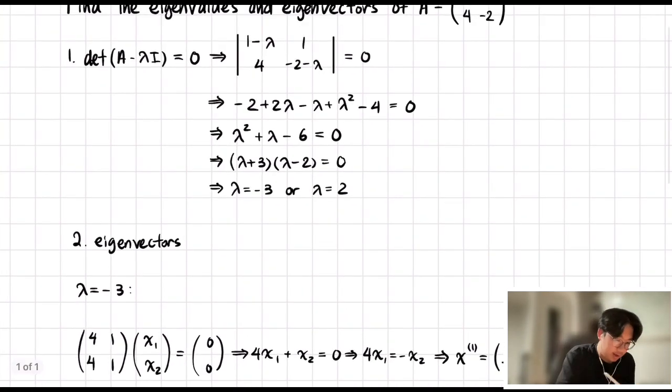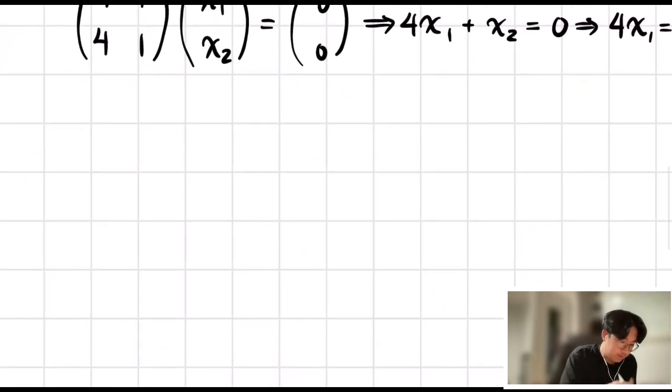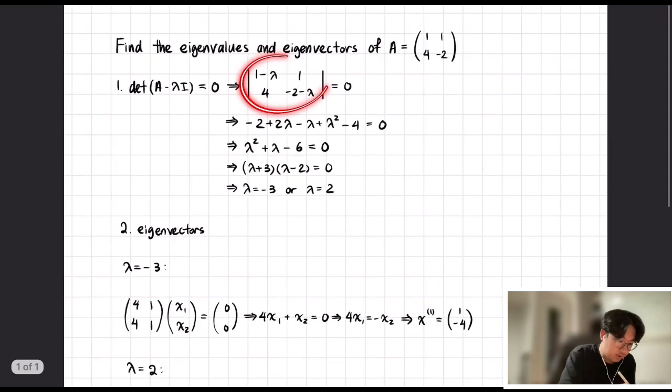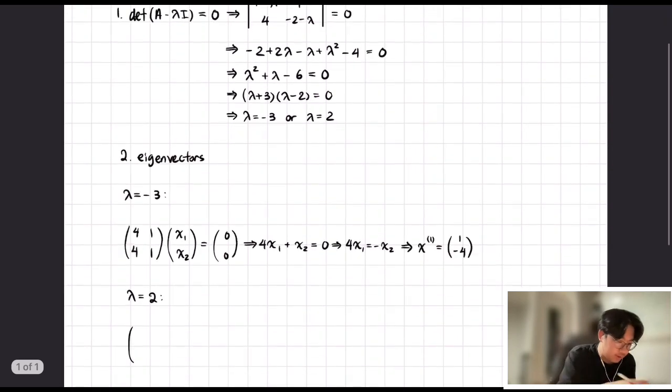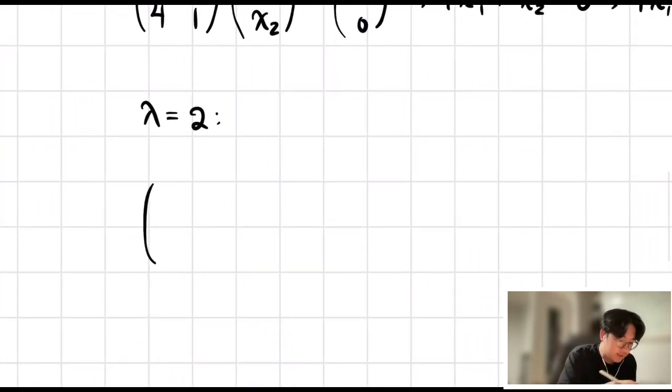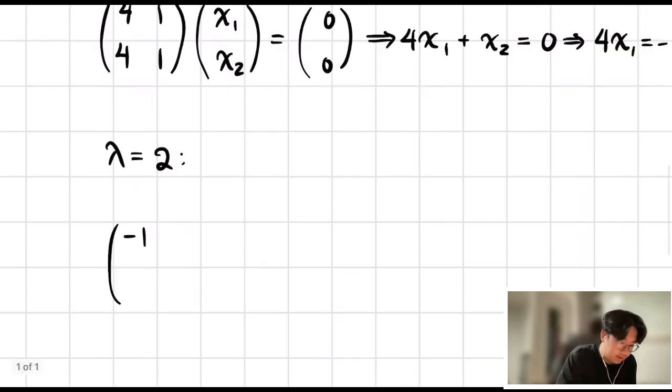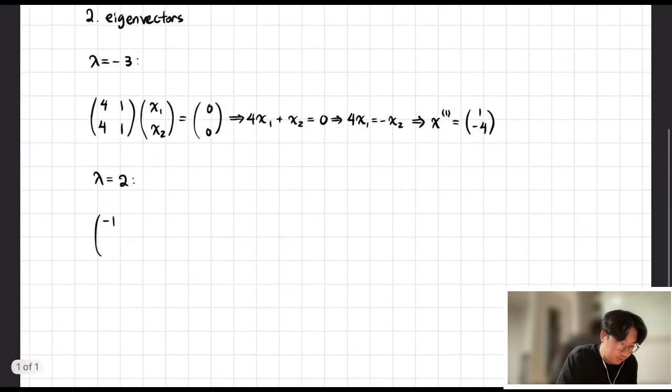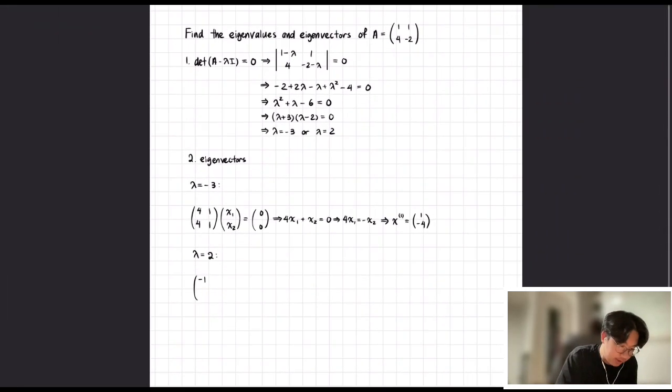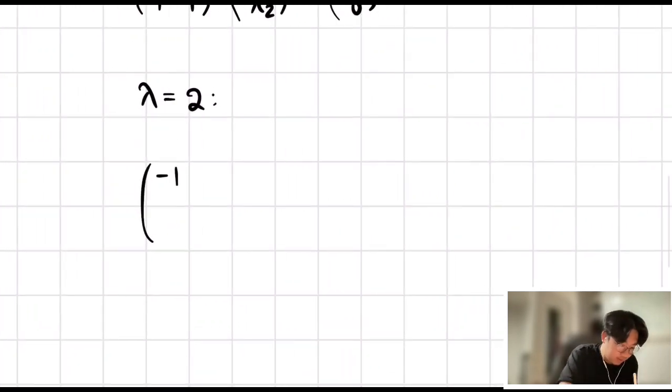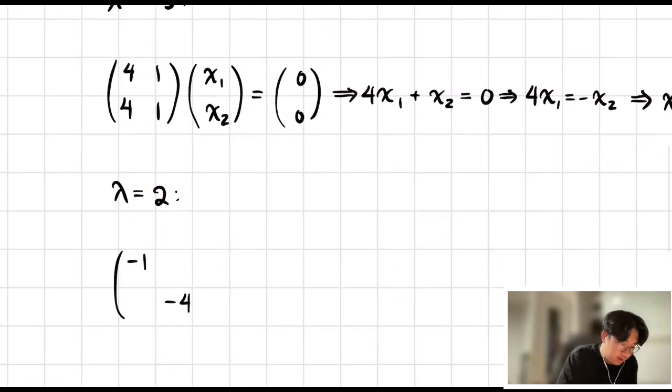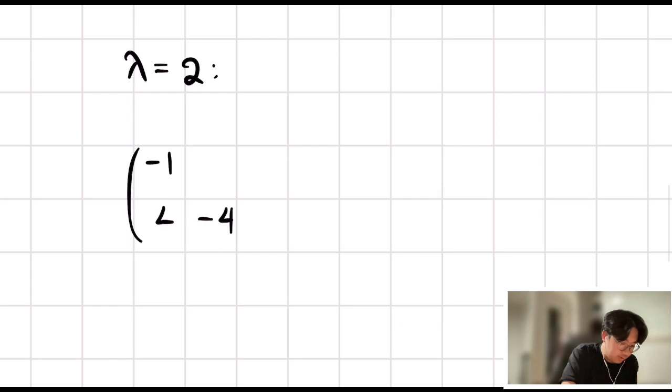Next, we have λ equal to 2. Same procedure. We plug it back into our matrix. 1 minus λ, 1 minus 2, negative 1. Negative 2 minus 2, so negative 4. And then we have 4 and 1 on the other entries.